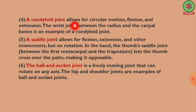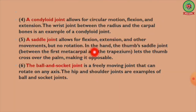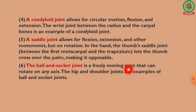A condyloid joint allows for circular motion, flexion, and extension; the wrist joint between the radius and carpal bones is an example. A saddle joint allows for flexion, extension, and other movements but no rotation; in the hand, the thumb saddle joint lets the thumb cross over the palm, making it opposable. The ball and socket joint is a freely moving joint that can rotate on any axis; the hip and shoulder joints are examples.